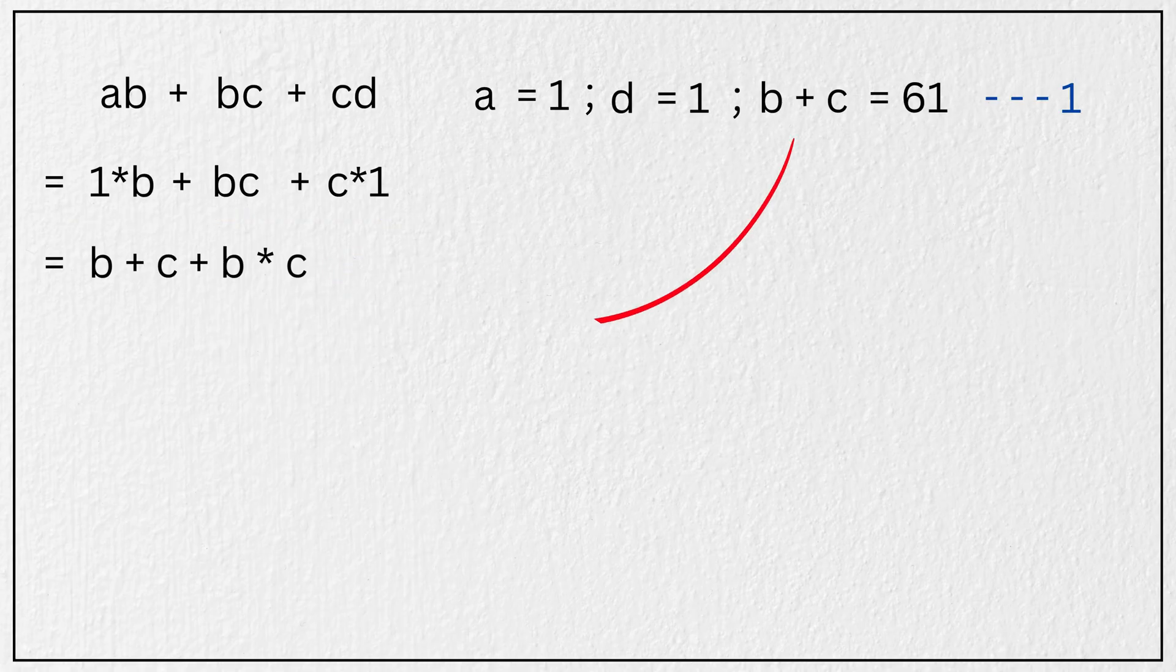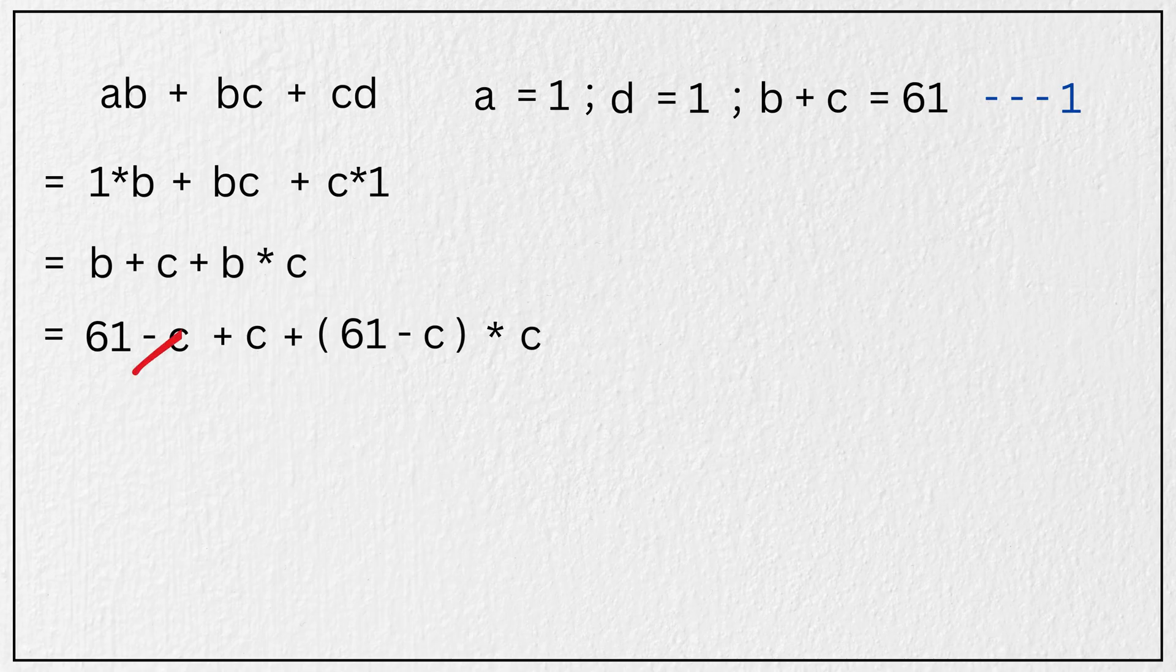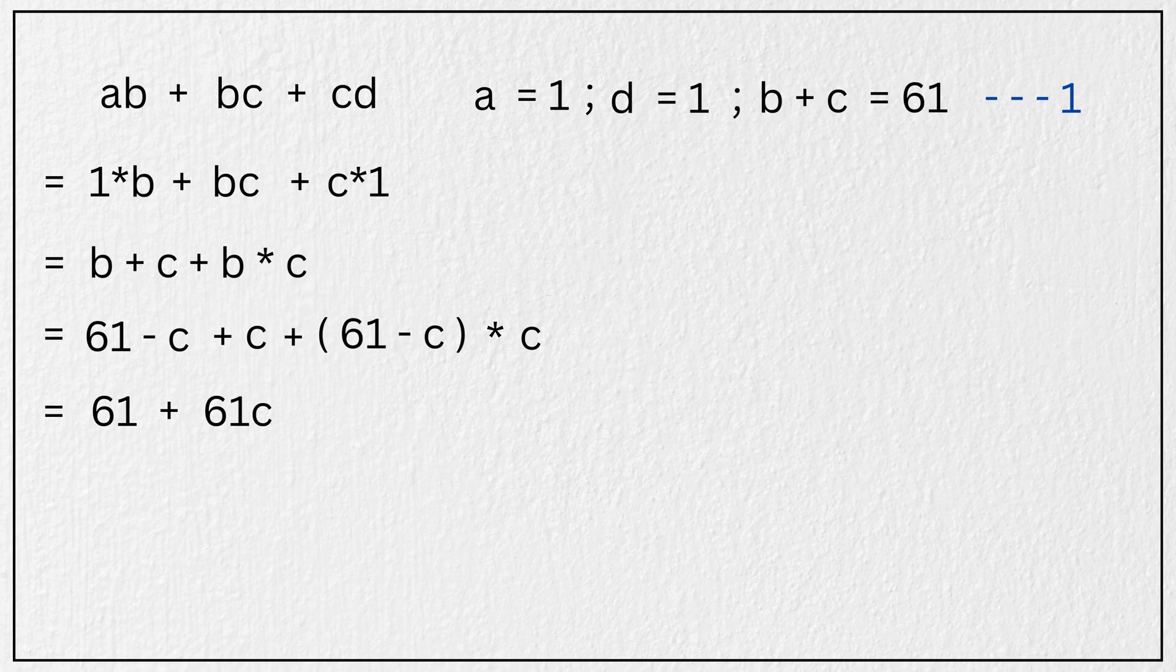Let's try substituting B as 61 minus C from equation 1. That gives us 61 minus C plus C plus quantity, 61 minus C times C. Now canceling this minus C and plus C and multiplying this out, we get 61 plus 61 times C minus C squared.